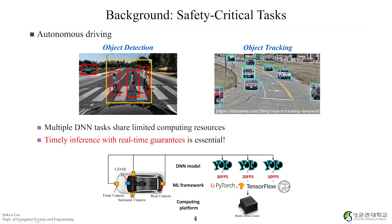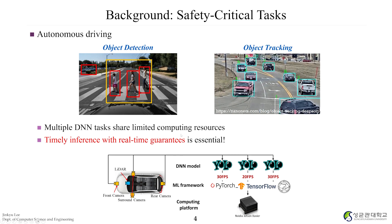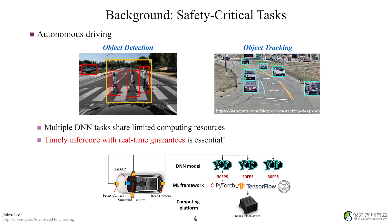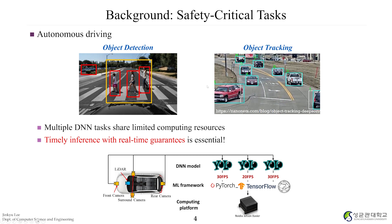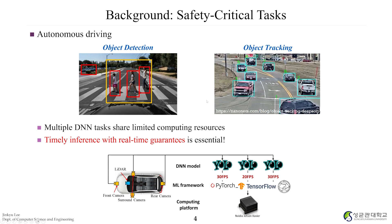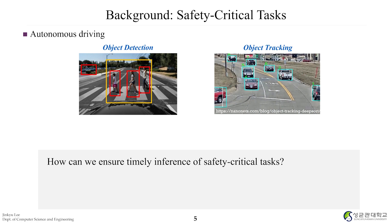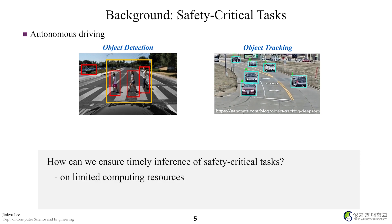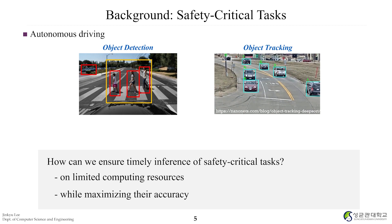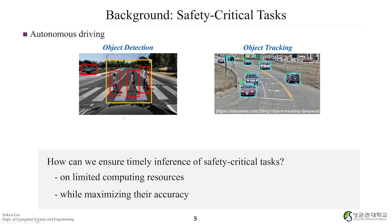The problem is that multiple DNN tasks share limited computing resources. In cars, we need to reduce cost and weight for computing resources. Many DNN tasks such as object tracking, multiple object detection from multiple cameras, could be required. We need timely inference with real-time guarantees. Accuracy means if the DNN model says this is a human and it is correct, that is accurate; otherwise it is inaccurate.